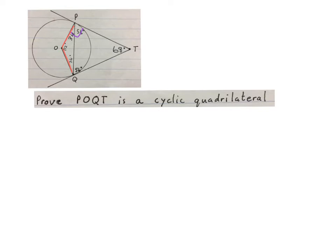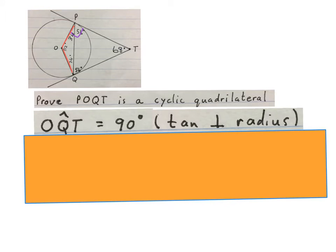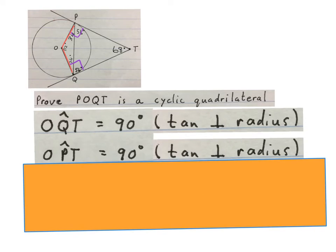The last piece of the question says, prove that POQT is a cyclic quadrilateral. Show it to you. POQT back to P, that is a cyclic quadrilateral. Now you need to know your theorems to know when is a cyclic quadrilateral. Stop the video and see if you can see what I'm going to write. First thing we write is OQT is equal to 90 degrees, and your reason tan perpendicular to radius. Then we write OPT is equal to 90 degrees, tan perpendicular to radius.